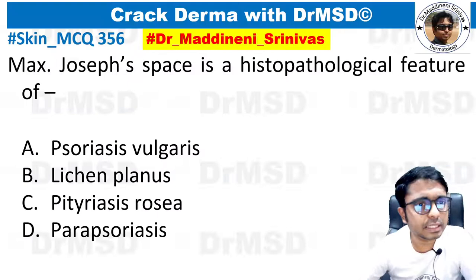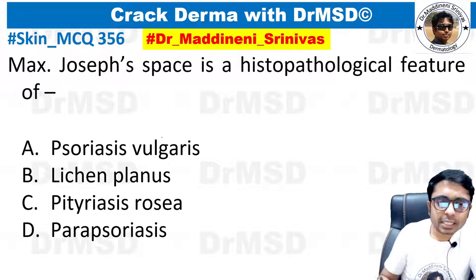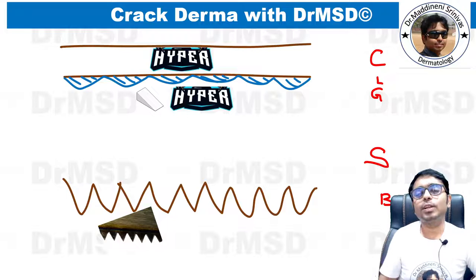With that, we will jump on to today's question, which is on histopathology. You can see there is one term: Max Joseph space, and you need to answer it. If you have marked it as option B, lichen planus — excellent! So let us see the histopathology of lichen planus.